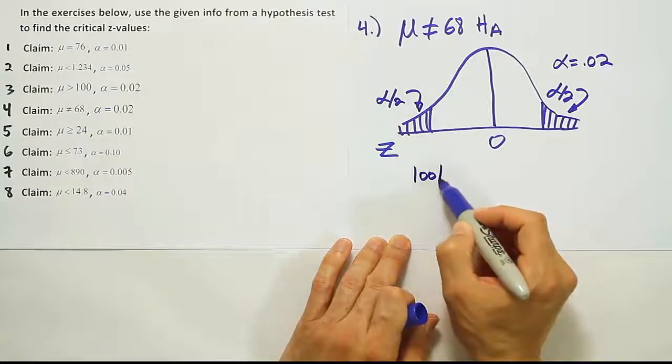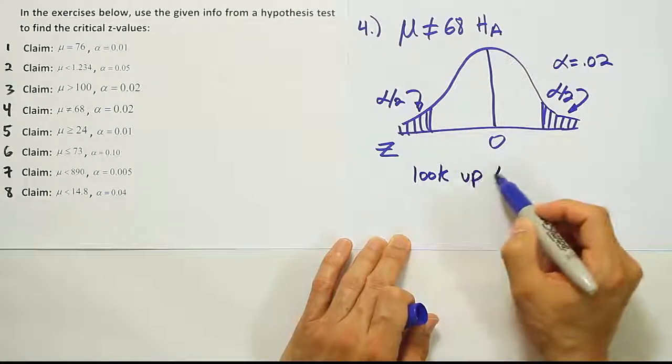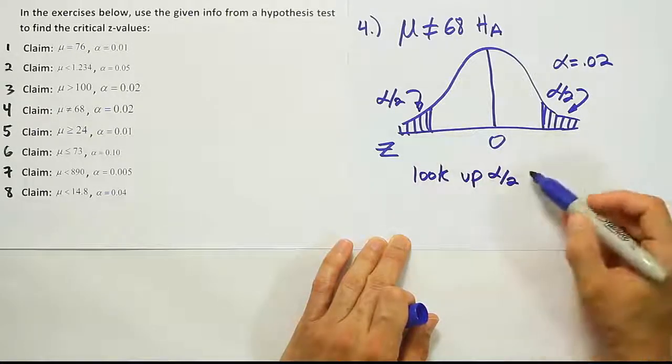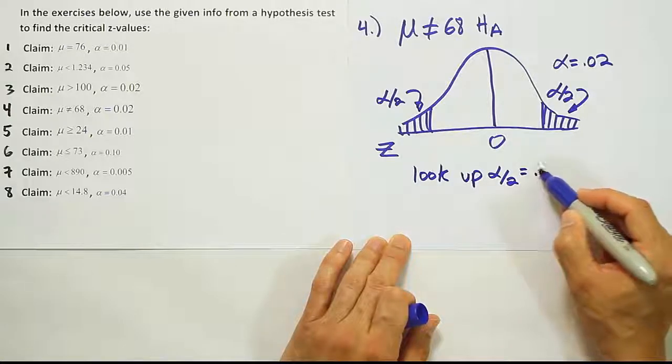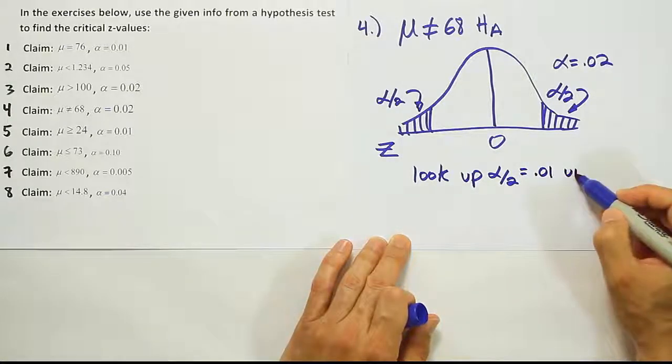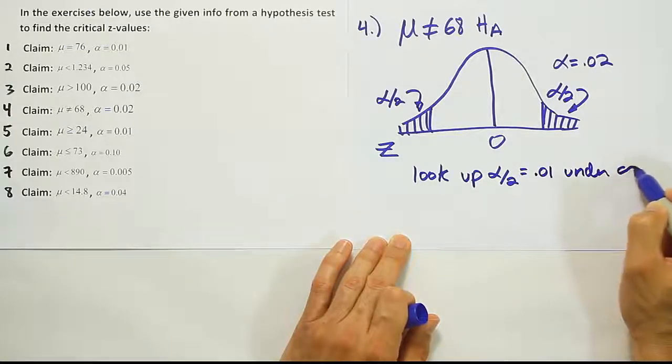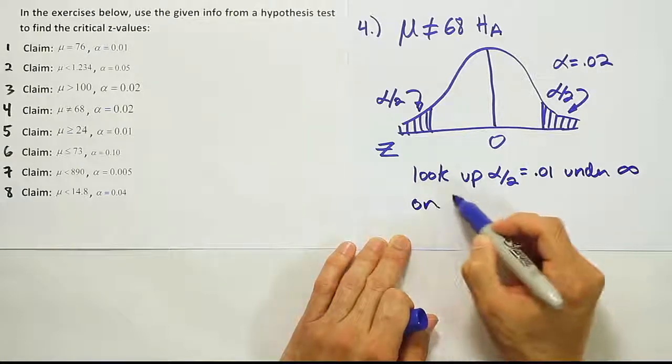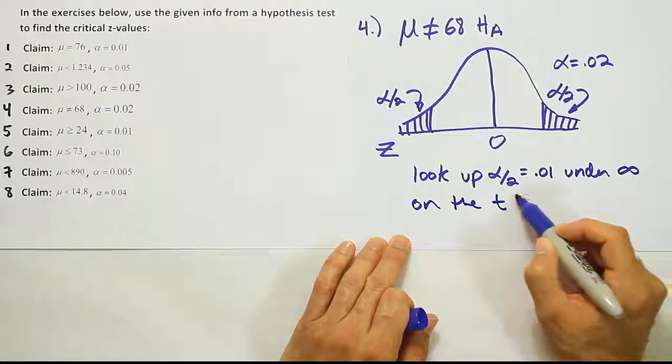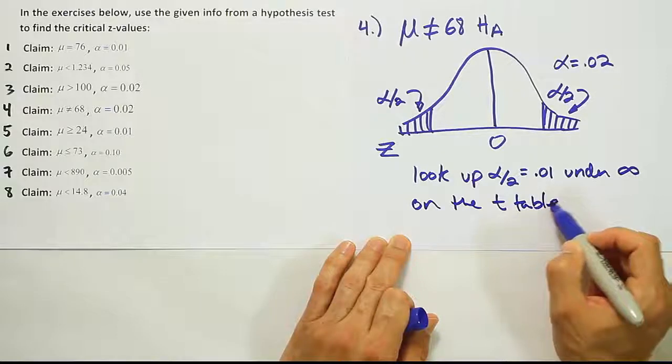So what we want to do is we're going to look up alpha divided by 2 because of the two-tailed test, which is going to be equal to 0.01 under infinity on the t-table. And that will give us our critical values.